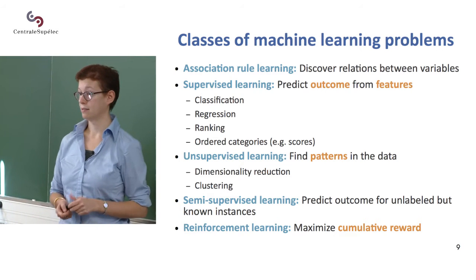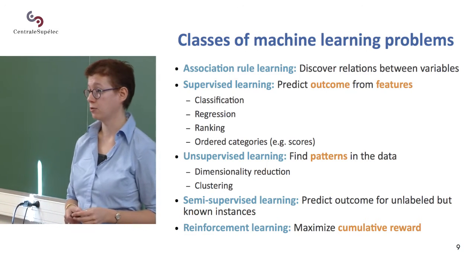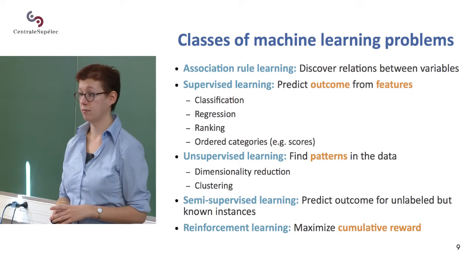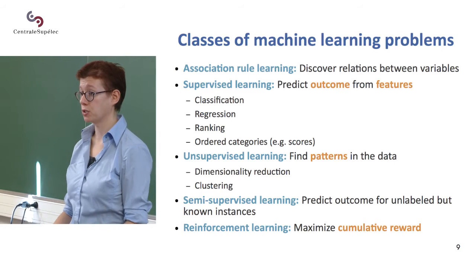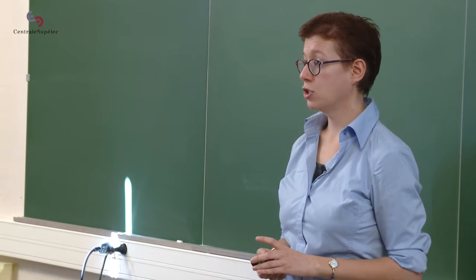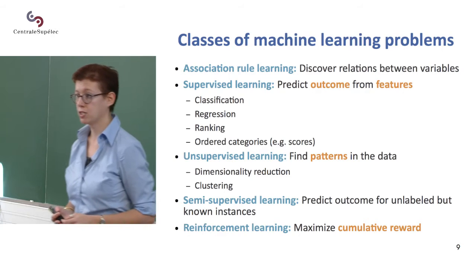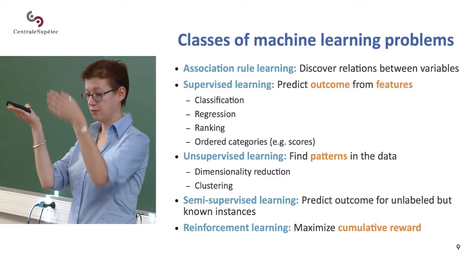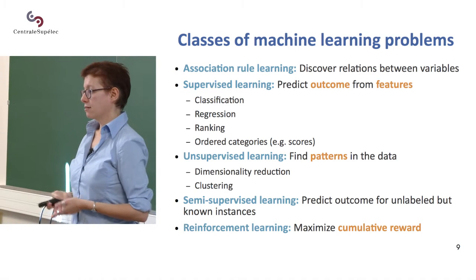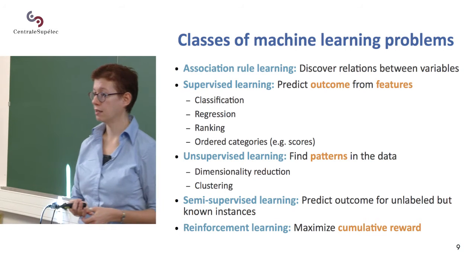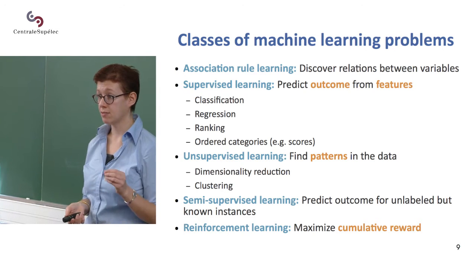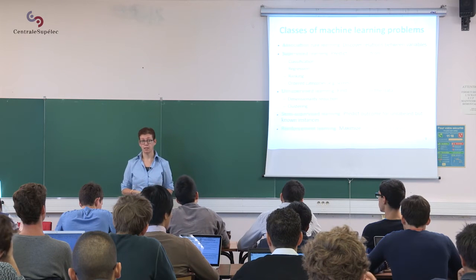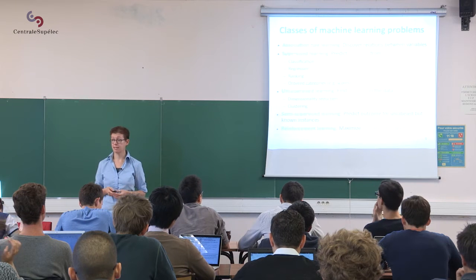Unsupervised learning is a similar idea, except that you don't have labels for your data. You just have a bunch of data and you're trying to learn something about it — for instance, a bunch of pictures but no one told you what they are. One thing you might do is dimensionality reduction: imagine your pictures are 64 by 64 pixels — that's a lot of variables. Dimensionality reduction aims at finding the important features, or finding new ways to represent the data with fewer variables, so you can visualize it or make more sense of it.